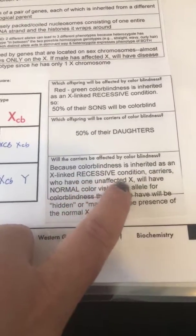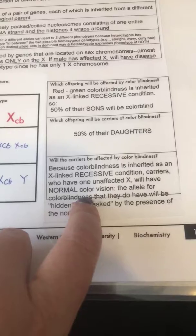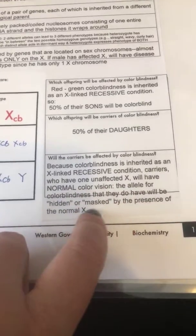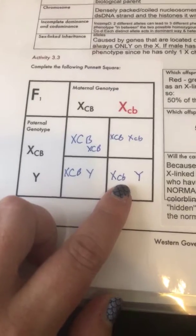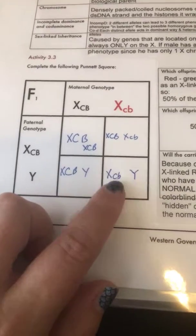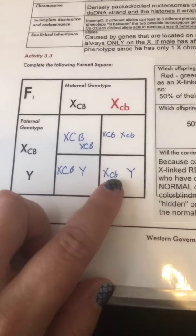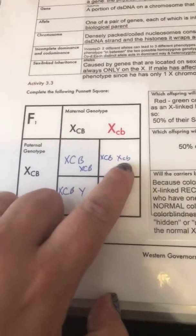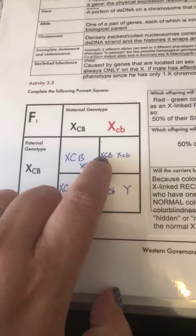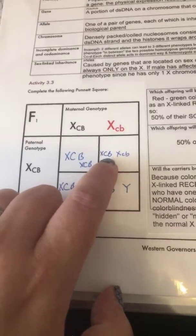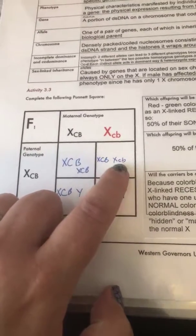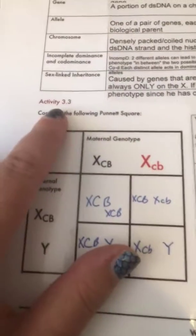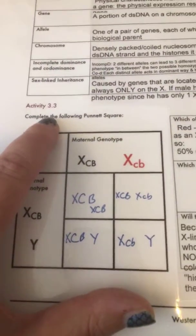Will the carriers be affected by colorblindness? X-linked recessive: unaffected X will have normal color vision, and they do not have the presence. So with this one, we're going to have this X-CB male having the colorblindness gene. And this one's going to be a carrier, but it's getting overwhelmed by the dominant, so this one's just a carrier. This is from Study Activity 3-3 if you need to review — hopefully that helps.